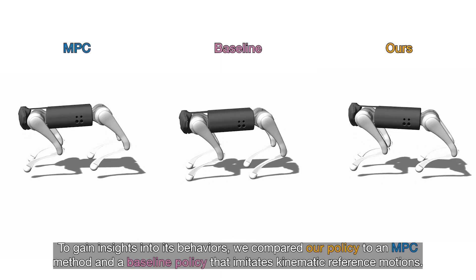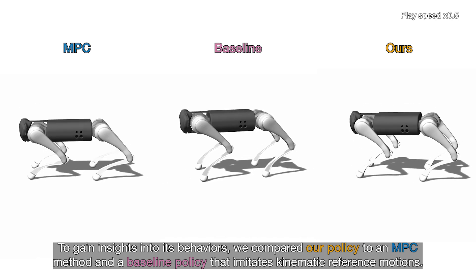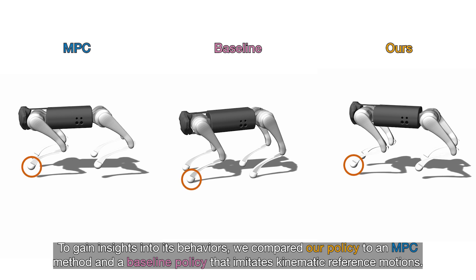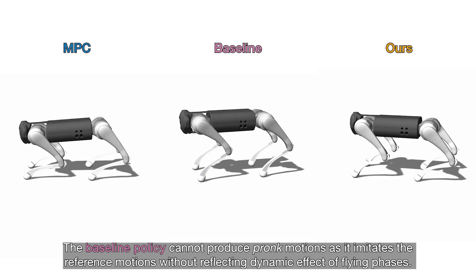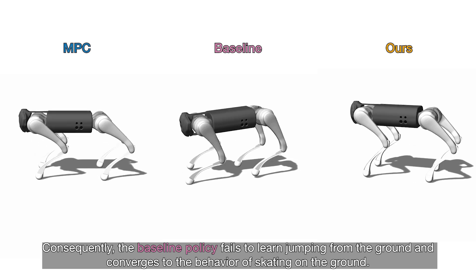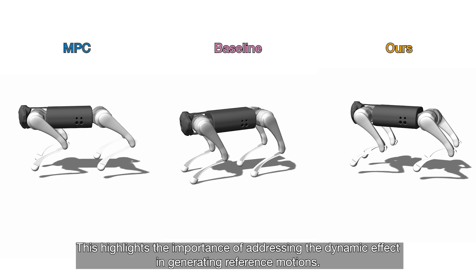To gain insights into its behaviors, we compared our policy to an MPC method and a baseline policy that imitates kinematic reference motions. The baseline policy cannot produce pronk motions as it imitates the reference motions without reflecting the dynamic effect of flying phases. Consequently, the baseline policy fails to learn jumping from the ground and converges to the behavior of skating on the ground. This highlights the importance of addressing the dynamic effect in generating reference motions.